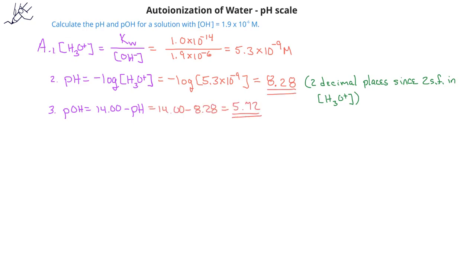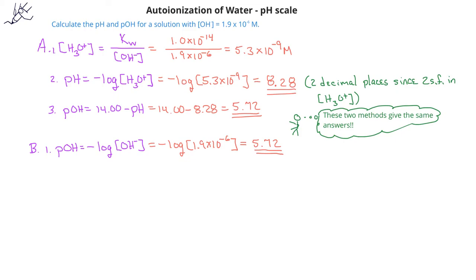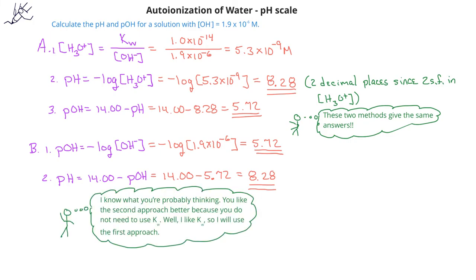The second approach involves first calculating the pOH directly from the given hydroxide ion concentration of 1.9 times 10 to the negative 6th. Taking the negative log gives a pOH of 5.72. To find the pH, we take 14 minus the pOH, or 14 minus 5.72, to get a pH of 8.28 — the same value obtained using the first approach. Both approaches work, so you can choose whichever you prefer.